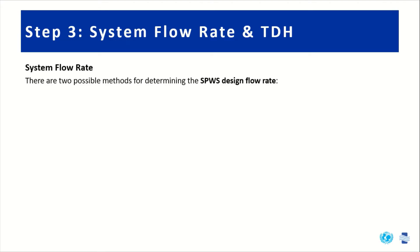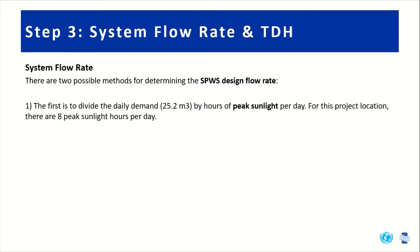We'll start with the system flow rate, and there are two possible methods for determining it. The first is to divide the daily demand — which was 25.2 cubic meters — by the expected hours of peak sunlight per day. For this project location, we estimate eight hours of peak sunlight per day, giving us 3.2 cubic meters per hour.